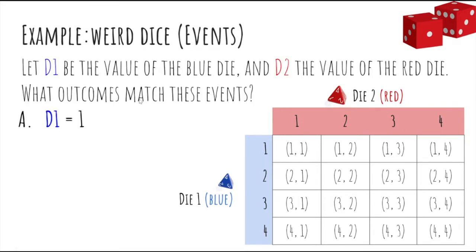Okay, so let's let D1 be the value of the blue die, and D2 the value of the red die. So what outcomes would match these events? So event A is that D1 is 1, so that means that dice 1 is 1, so that corresponds to anything in this row here.